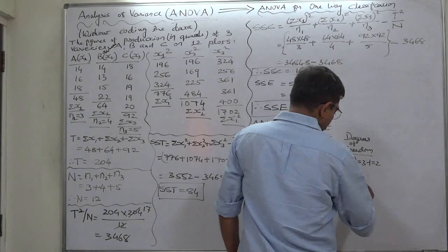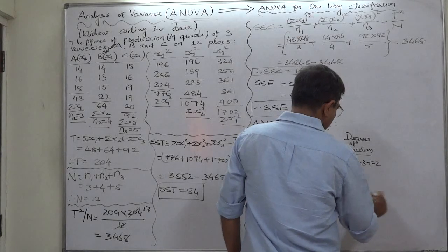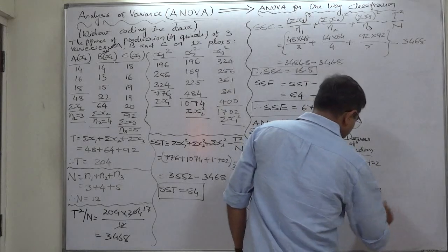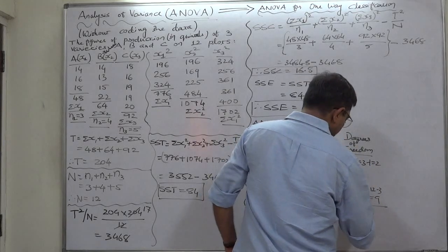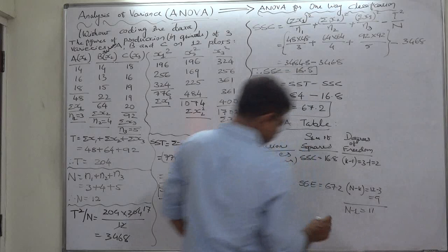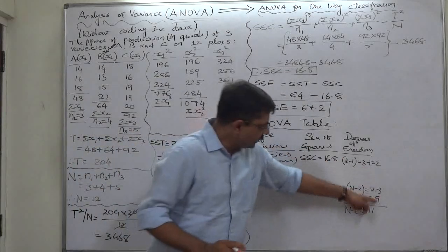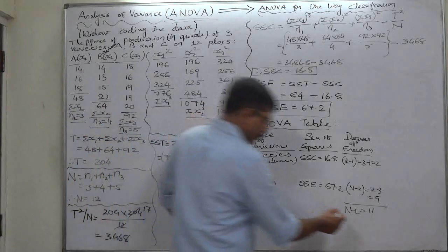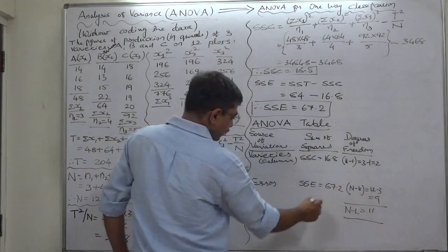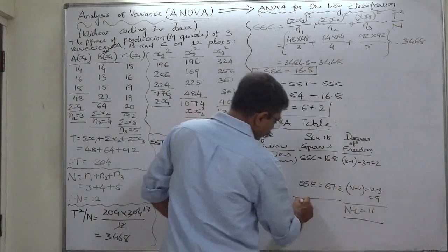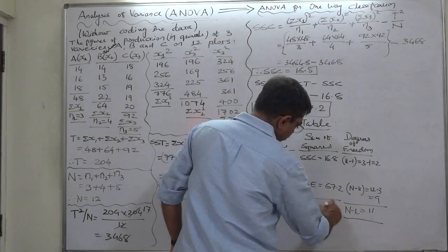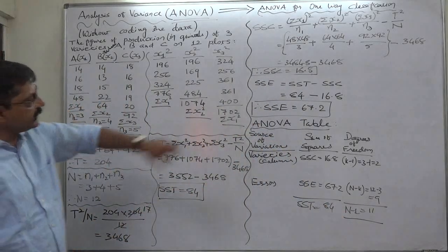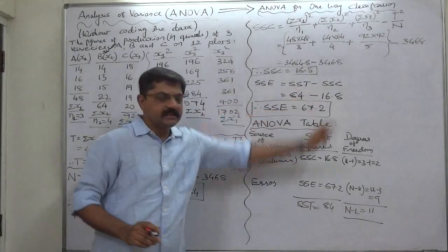The degrees of freedom for error is n minus k, which is 12 minus 3 = 9. The grand total degrees of freedom should be n minus 1 = 11. Checking: 2 plus 9 = 11, which equals 12 minus 1 = 11, so both are correct. The total of SSC and SSE must obviously equal SST, which we already calculated.